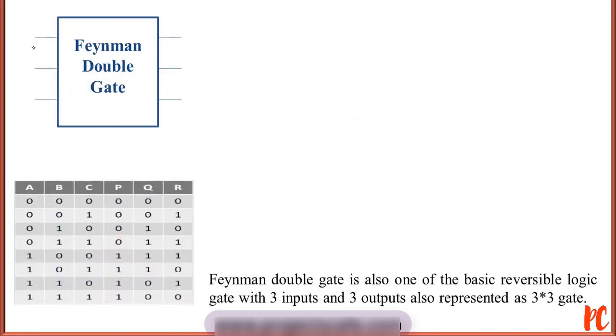Coming to Feynman reversible double gate, here we have three inputs A, B, C followed by three outputs P, Q, and R. P is a combination of A, Q with A XOR B, and R with A XOR C. The functionality is P which is replication of A, Q performing A XOR operation with B, and R performing A XOR operation with C.